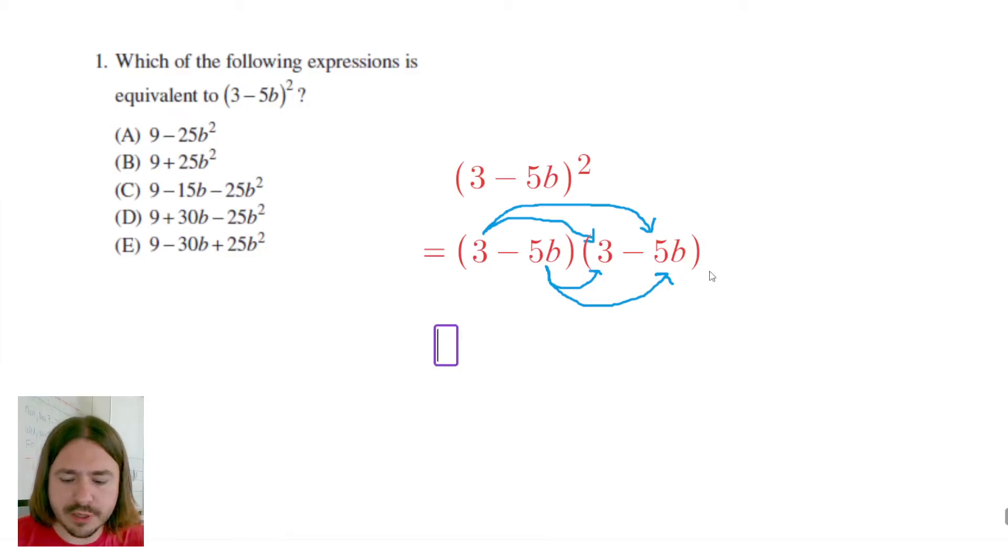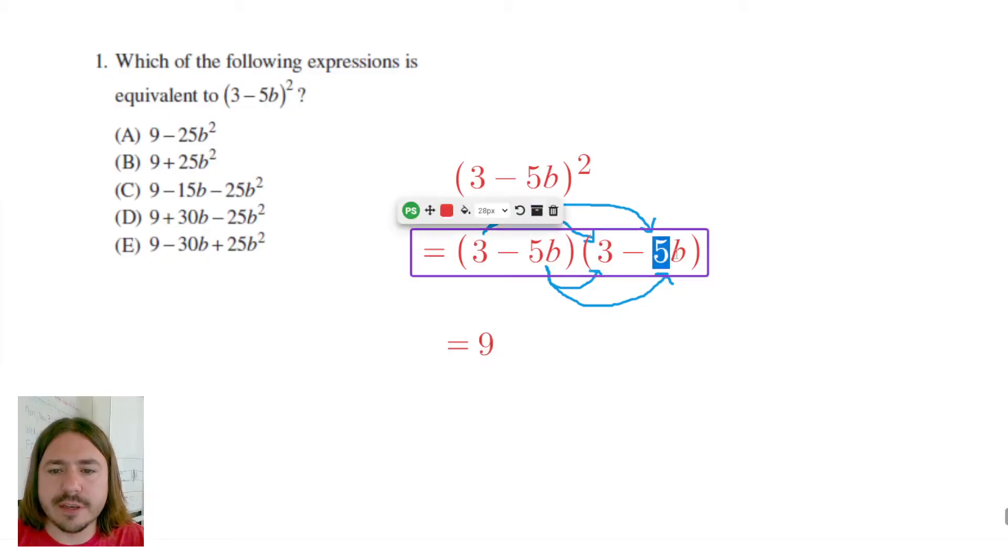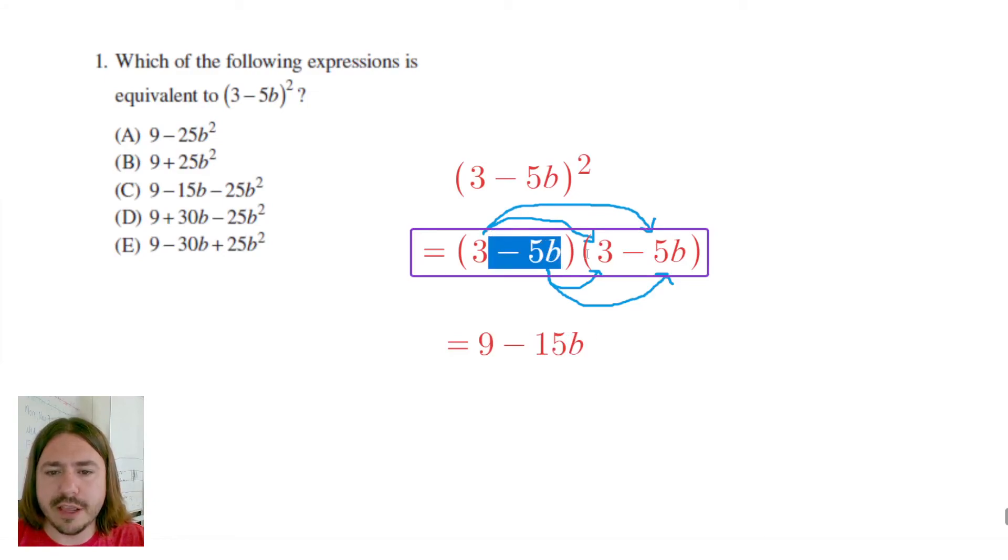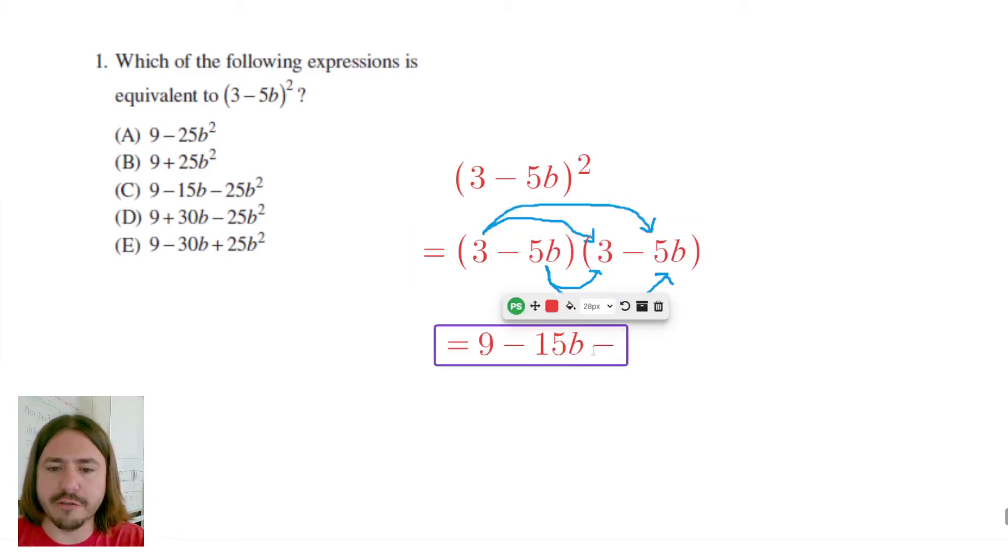3 times 3 is going to give us 9. 3 times negative 5b is going to give us negative 15b. We have to do that again here. Negative 5b times 3, so we get another negative 15b.